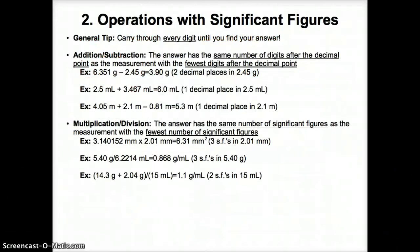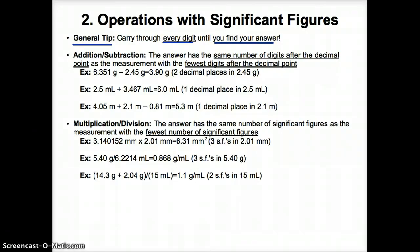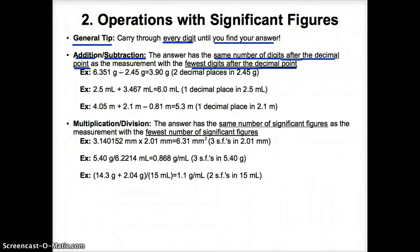Next, let's discuss operations with significant figures. No matter what operation you use — whether it's addition, subtraction, multiplication, or division — make sure that you carry through every digit until you find your answer, then at the end reduce it to the correct number of sig figs. For addition and subtraction, the answer you get must always have the same number of digits after the decimal point as the measurement with the fewest digits after the decimal point.